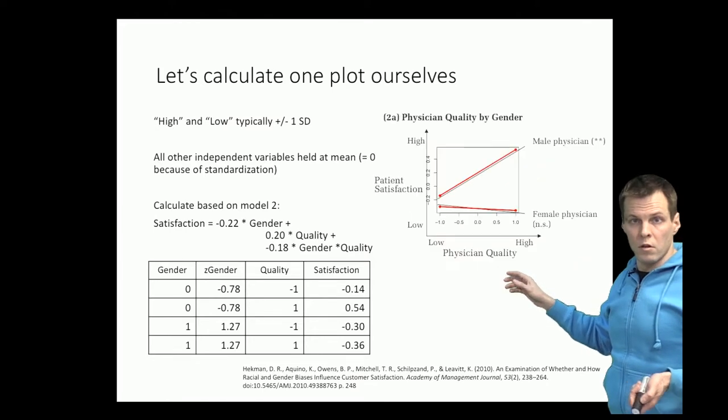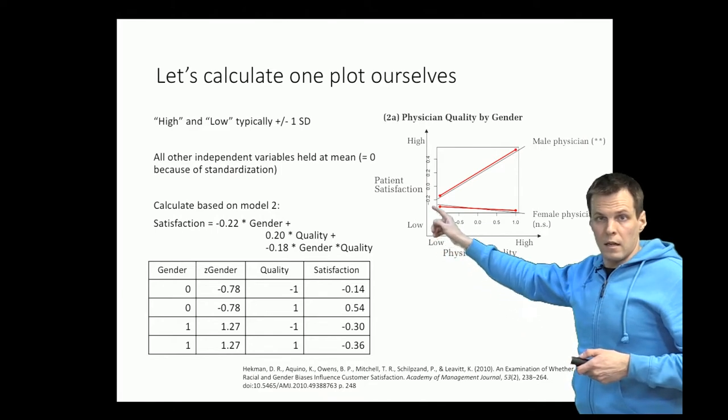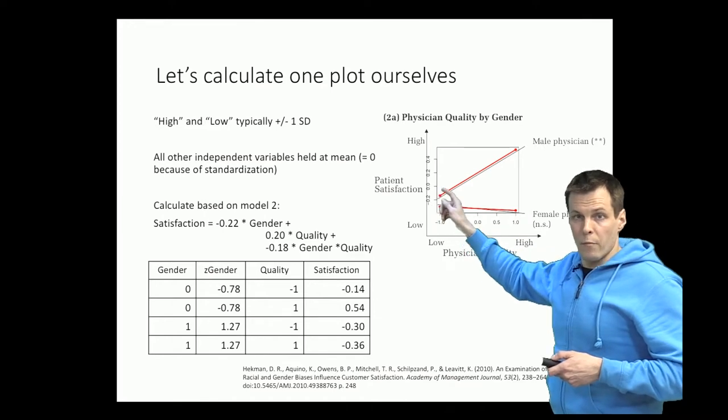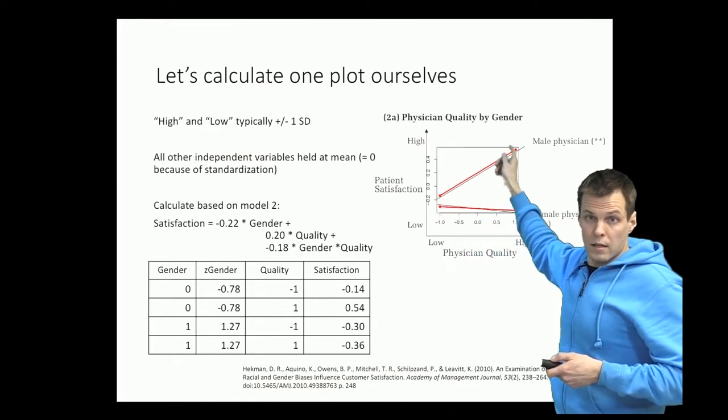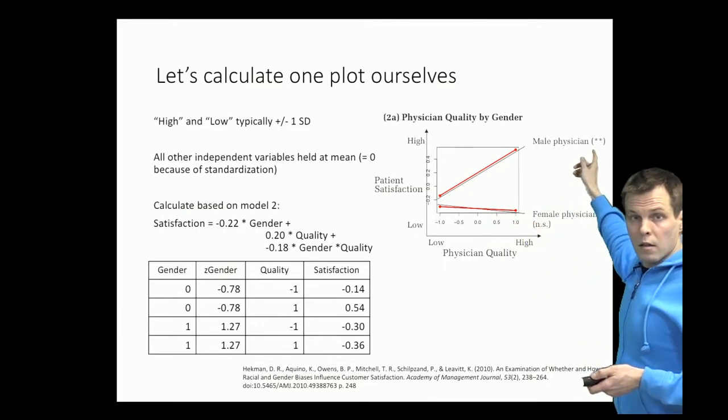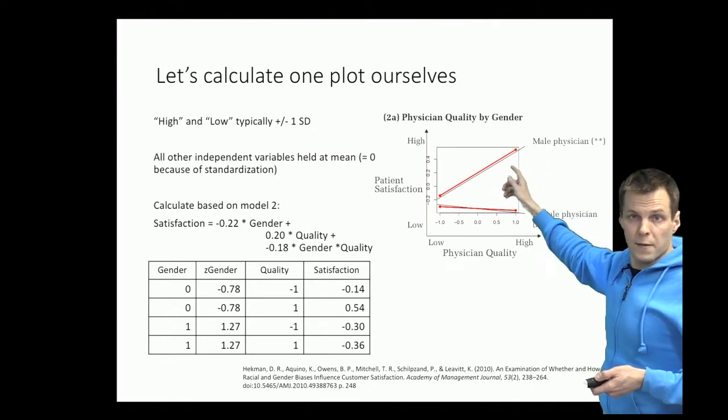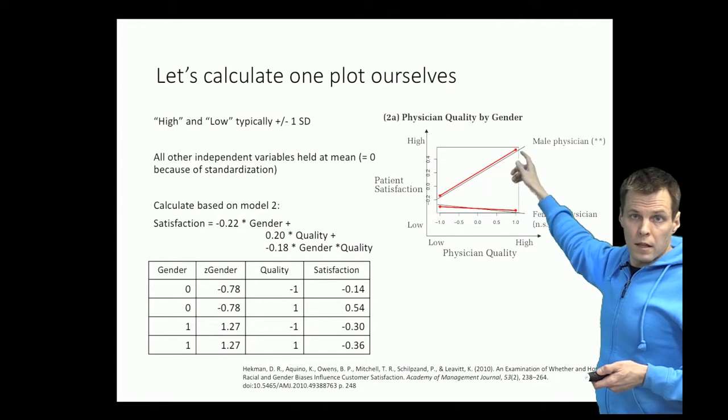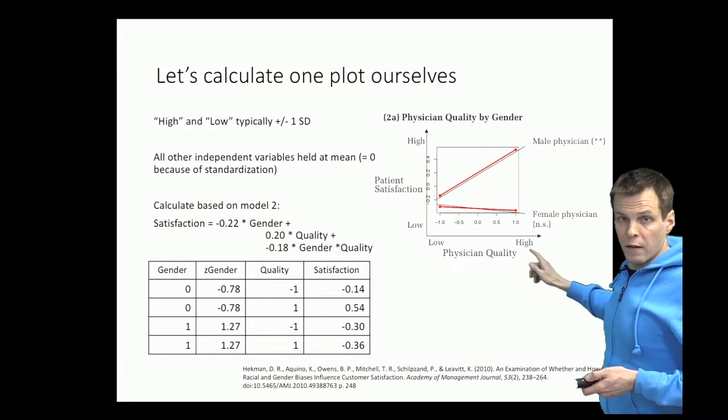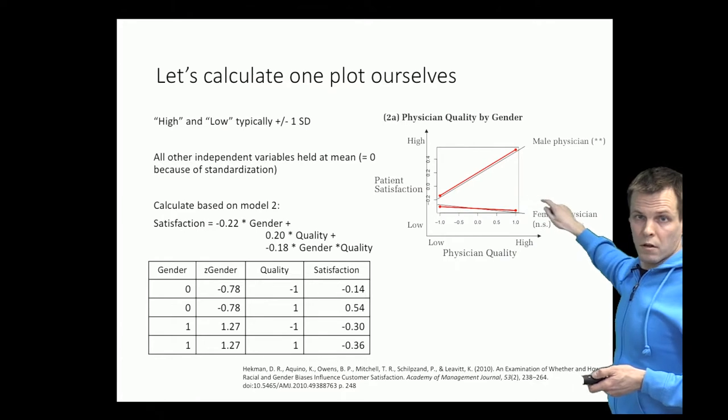And if we put this plot right over the original plot, we can see that it's the same. So we can calculate the interaction plot ourselves. And this line here is the regression line for females. And this is the regression line for males. And we can see that it's quite substantially different. These significant stars are tests for simple slope. So they test whether this regression line is flat, whether the slope is zero. And we reject that hypothesis here. We can't reject it for the female physician's line because it's so close to being just flat horizontal line.